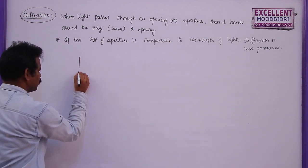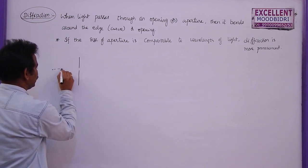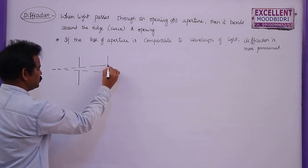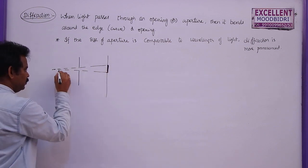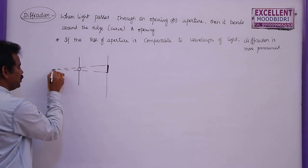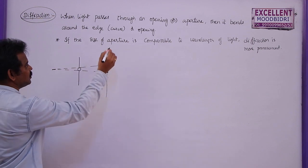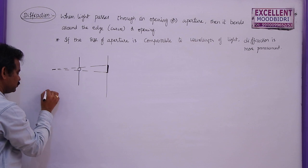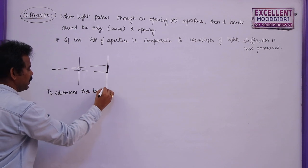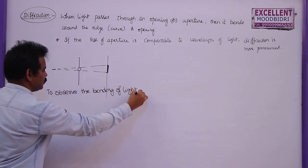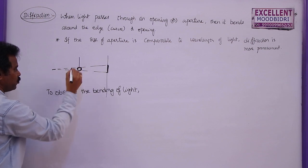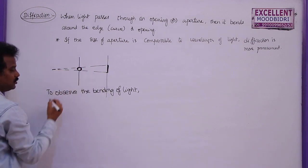Suppose we take a small slit. This is the source and light is coming through this region. If you keep a screen here, this is the region at which you can find brightness. Now if the size of this opening is almost comparable to the wavelength of the light, then you can see this bending very easily. To observe the bending of light, the size of the aperture or hole should be comparable to the wavelength of the light passing through it.